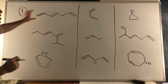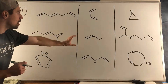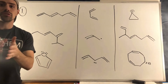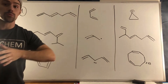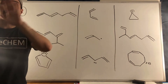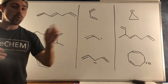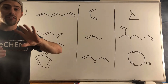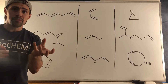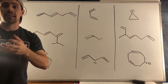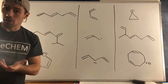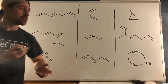We're just going to go row by row. Remember, for conjugation we're looking for a network of three or more atoms that have parallel p orbitals, or in a rare case we have an atom with a lone pair that it can throw parallel to those other p orbitals.